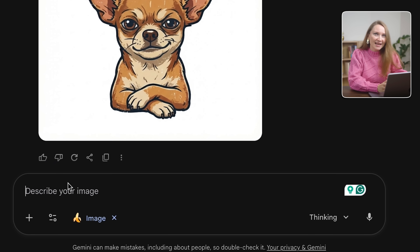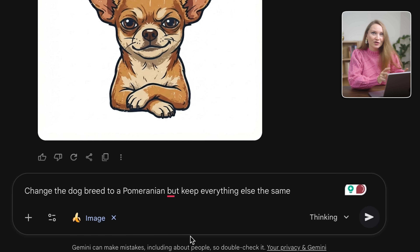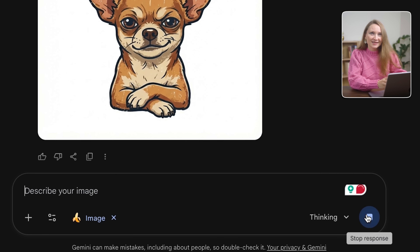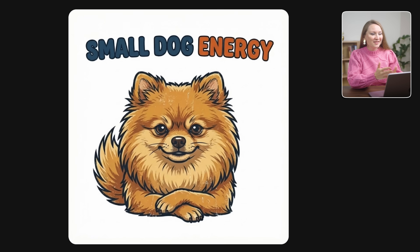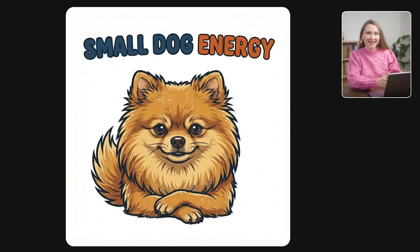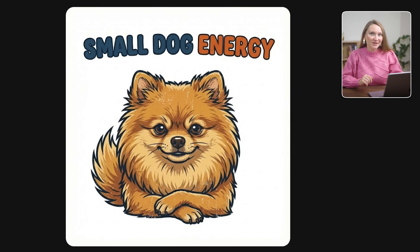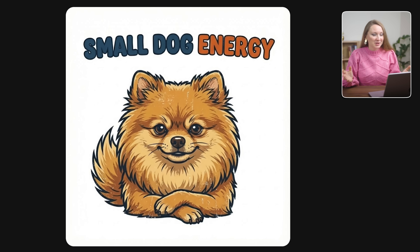Now let's test something specific: change the dog breed to a pomeranian but keep everything else the same. And there it is — the breed changed, the sass stayed, the text positioning is still perfect. This kind of precision used to require thorough work in Photoshop, but now it's just one sentence.